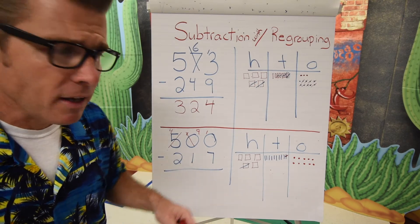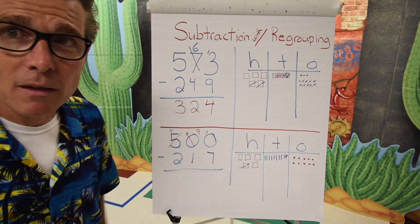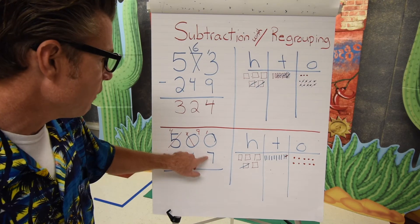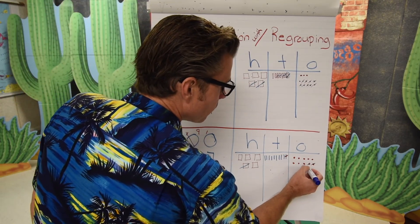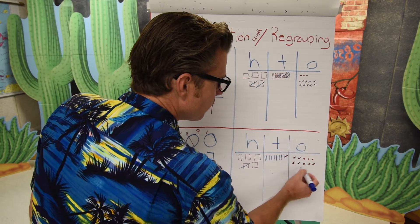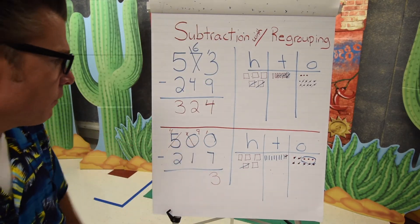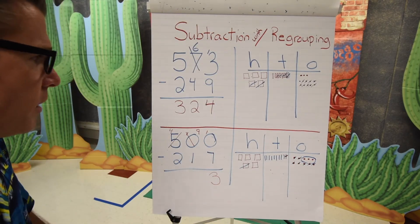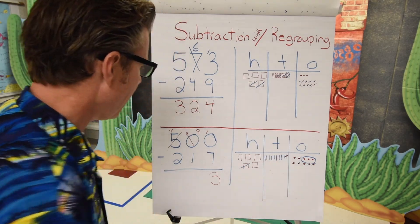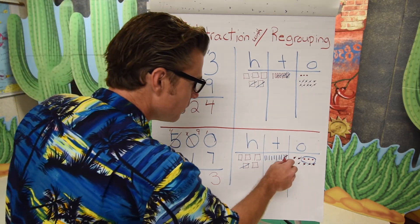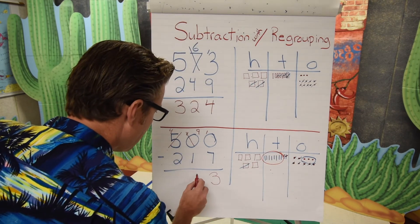Now every spot has some value, so let's see if we can make this work. We're trying to take seven away from ten — and we can do that. Removing seven ones leaves us with three. Seven from ten is three. Moving to the tens: we have nine and we're trying to take one away, leaving us with eight.